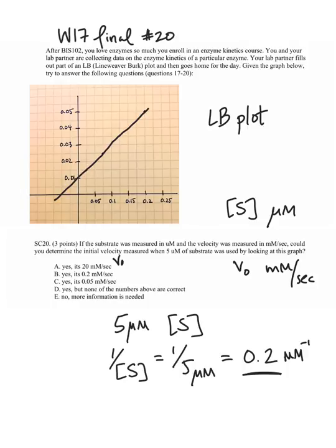And so remember, in your experiment, for every substrate you use, you measure a particular initial velocity, and that's what you measure in a lab. And then when you plot an LB plot, you just take the inverse of each substrate and the inverse of each appropriate initial velocity and plot that on this graph.